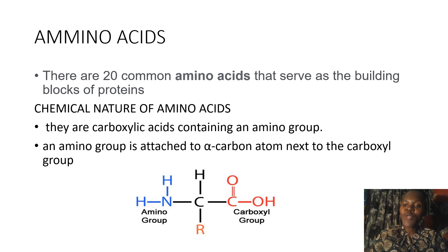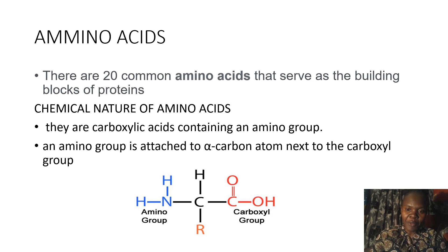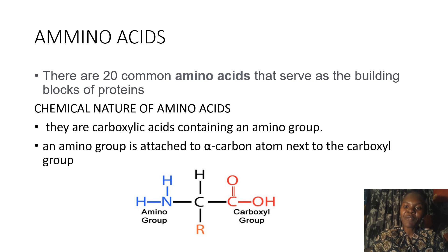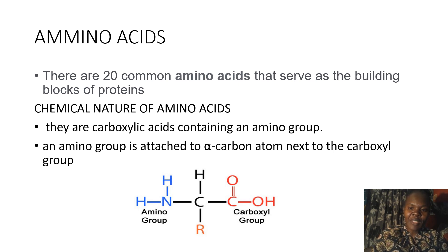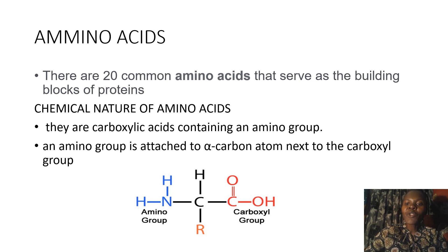The 20 amino acids are what make us who we are. It starts from DNA synthesis and the replication process, then it moves to transcription. At transcription, the messenger RNA carries the codon. After post-transcriptional modification, it moves to the translation process — the synthesis of proteins. The messenger RNA carries the codon, which are three bases that translate to an amino acid. A linear chain of amino acids forms a polypeptide, which further forms a protein.